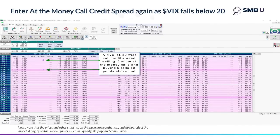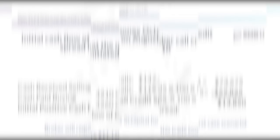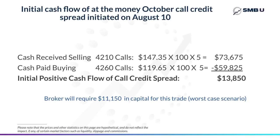And as we did before, we'll sell five calls right at the closing price of SPX at 4210, and we'll buy five calls 50 points above that at 4260 to form a 50-point-wide call credit spread, which again is a bearish position. As you can see from the same kind of calculation as we did in the last trade, in this case we collected $13,850. And in this case, your broker would require a little more — $11,150 in your account to initiate this trade.